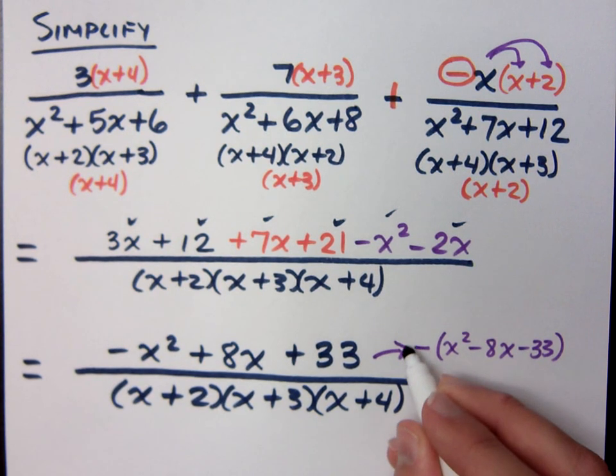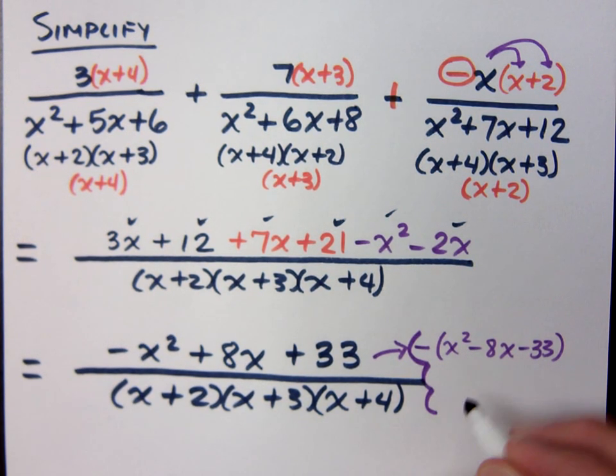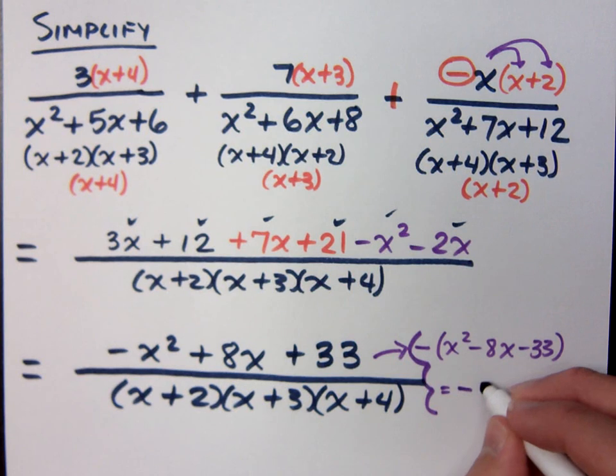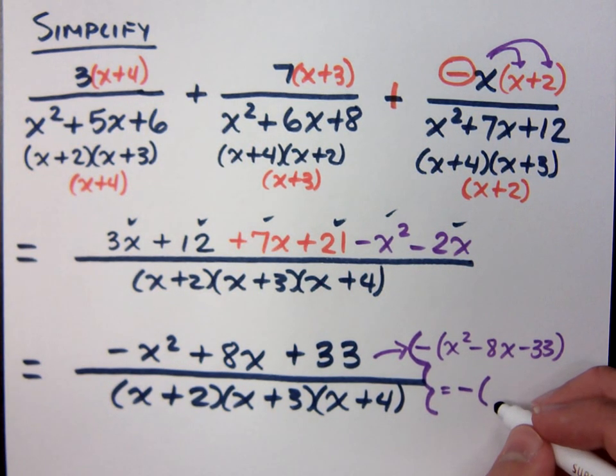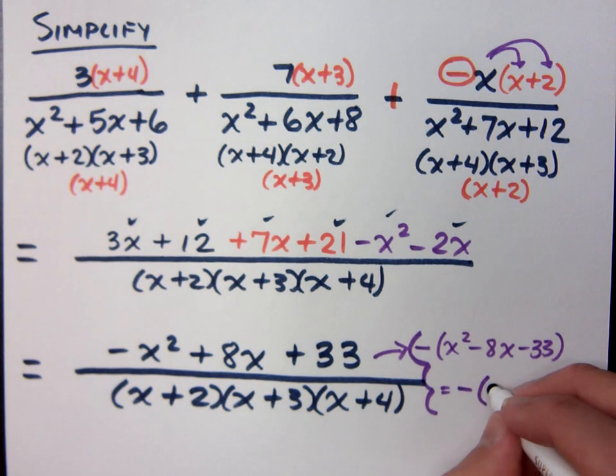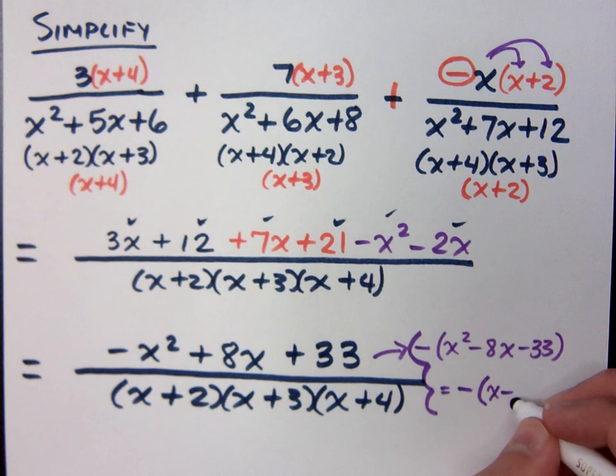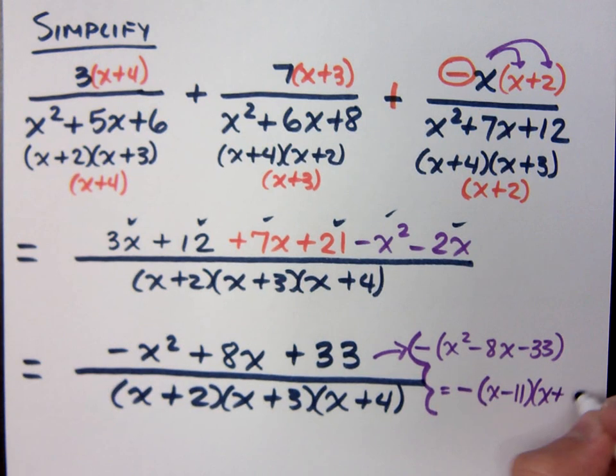Can you do anything with this guy? The negative is still out there. How does that factor? What are the numbers that multiplied to give you 33? It's x minus 11, x plus 3. So x minus 11, x plus 3.